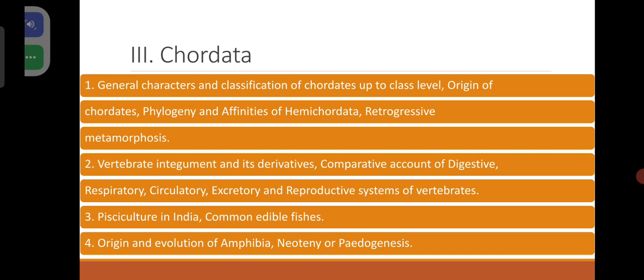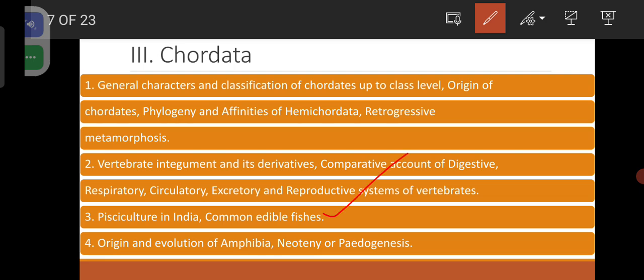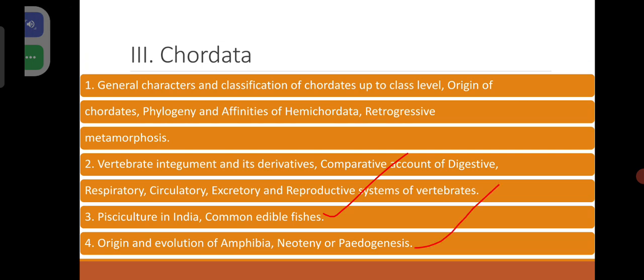Pisciculture in India. Common edible fishes — we will discuss all these things in detail. Origin and evolution of Amphibia, neoteny and pedogenesis. Almost every week, we will try to give certain questionnaires and discuss in the form of questions also.